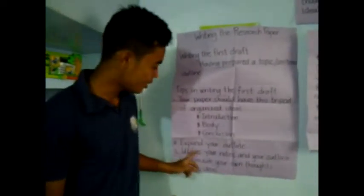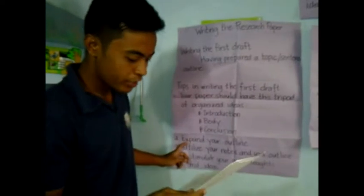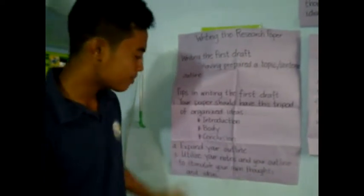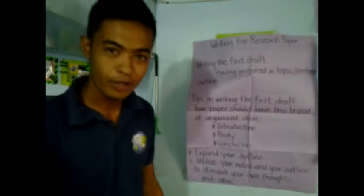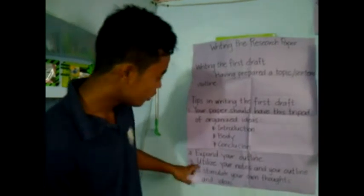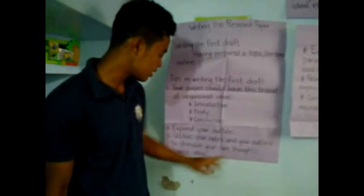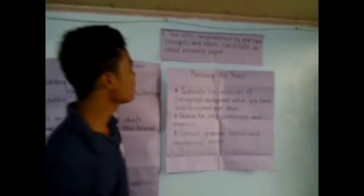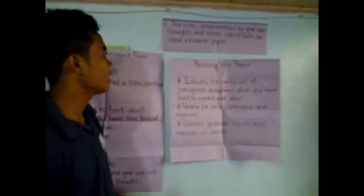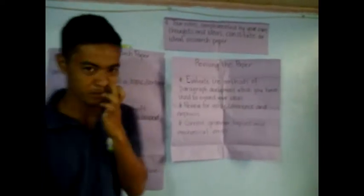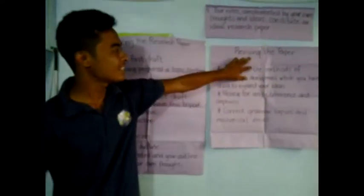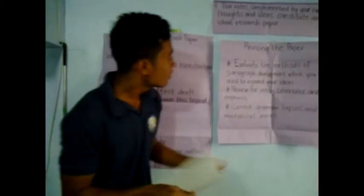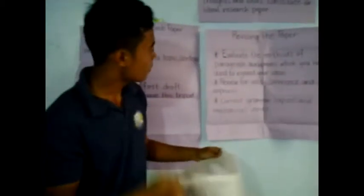Second is to expand your outline. Expand your outline section by section so it becomes the body of your paragraph. Then utilize your notes and your outline to stimulate your own thoughts and ideas. Your notes complemented by your own thoughts and ideas constitute an ideal research paper. The next is revising the research paper.